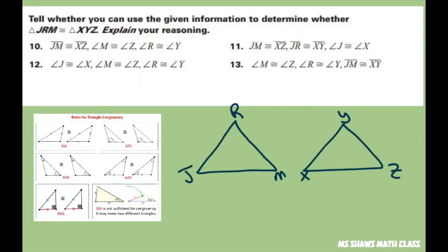And then for 13 we have angle M and C, R and Y, and JM with XY. JM is congruent to XY. Alright. So this is the angle side side or side side angle. And this would be a no, because it's not sufficient for congruency because it can make two different triangles.